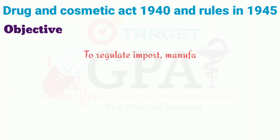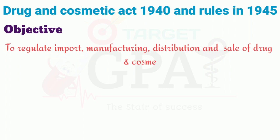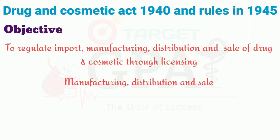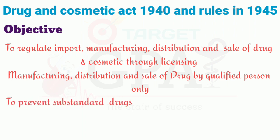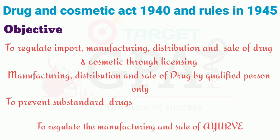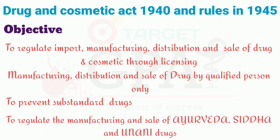The first objective is to regulate import, manufacture, distribution and sale of drugs and cosmetics through licensing. The second objective is that manufacture, distribution and sale of drugs and cosmetics should be done by qualified persons only — according to this act, only B.Pharm or D.Pharm qualified persons can manufacture, distribute and sell drugs and cosmetics. The third objective is to prevent substandard drugs. The last objective is to regulate the manufacturing and sale of Ayurveda, Siddha and Unani drugs.